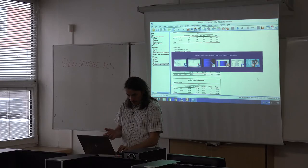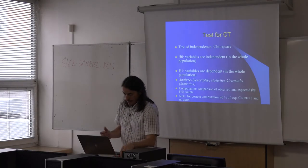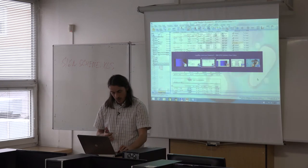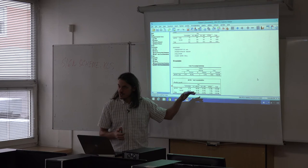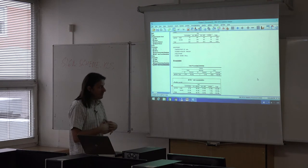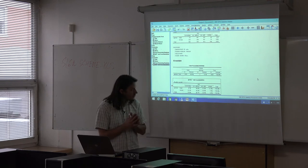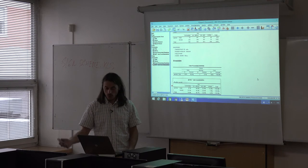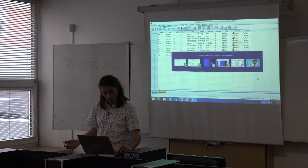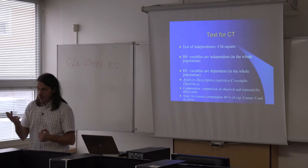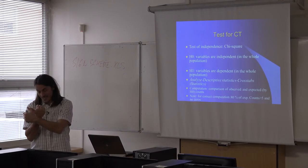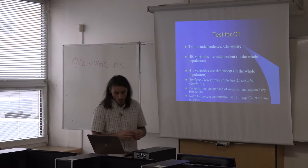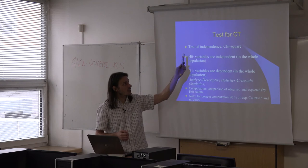This is only descriptive statistics — a description of our sample. But we want to know whether we can also expect these differences in the whole population. To generalize from sample to population, we have two tools in classical statistics: tests or confidence intervals. For contingency tables we mostly use tests, and the basic test is the chi-squared test of independence.